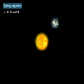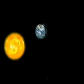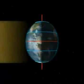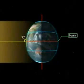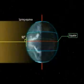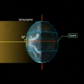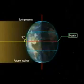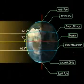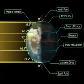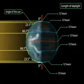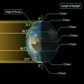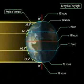Spring Equinox: On the 21st or 22nd of March, the overhead sun is over the equator. The equator receives the largest amount of solar radiation. At this time, the northern hemisphere is in the spring equinox, while the southern hemisphere is in the autumn equinox. The angle of the sun decreases towards the poles. On this day, the two hemispheres receive a similar amount of solar radiation, and the length of day and night is the same at all places on the Earth.